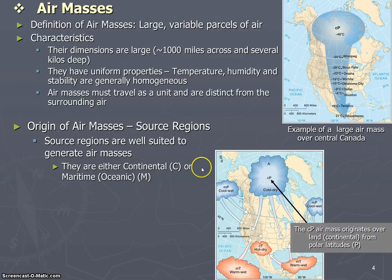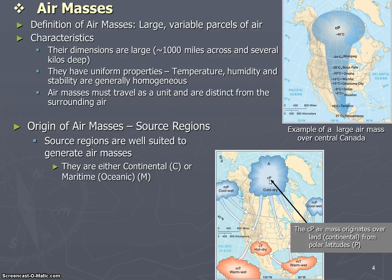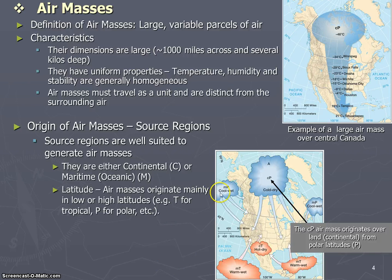Air masses are going to have a lowercase c or a lowercase m before them. M stands for maritime, so it's going to be an air mass that originates over an ocean. Lowercase c stands for continental, originating over a land mass. The second letter in the air mass designation indicates the latitude — uppercase P for polar and uppercase T for tropical. You might also have an uppercase E for equatorial and an A for arctic or antarctic.